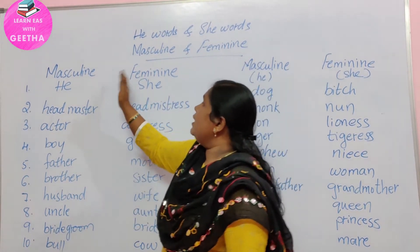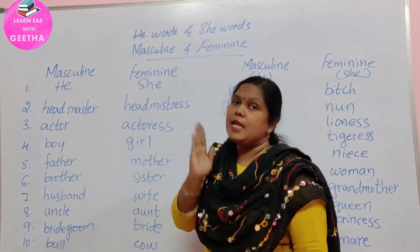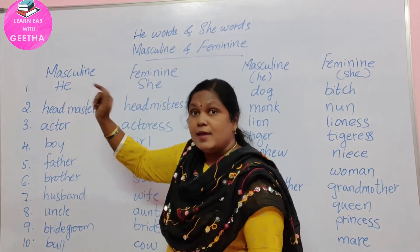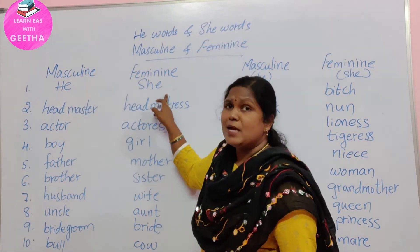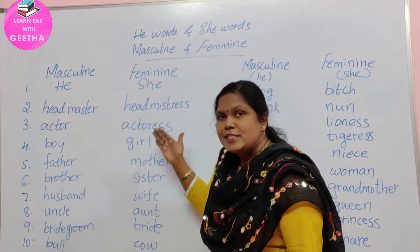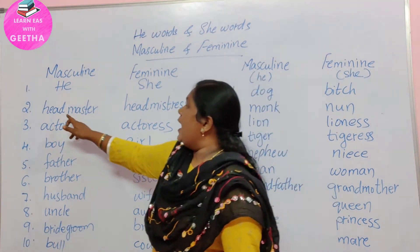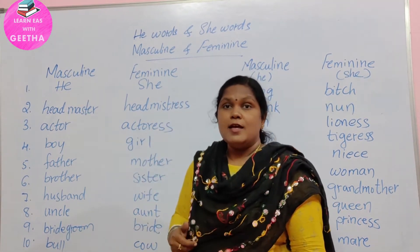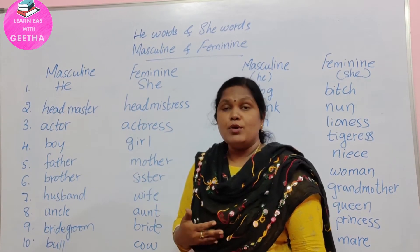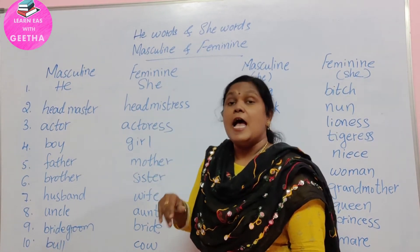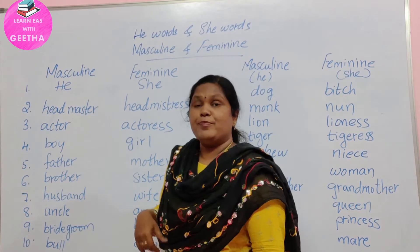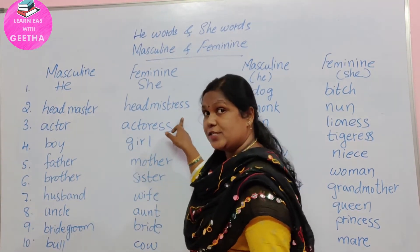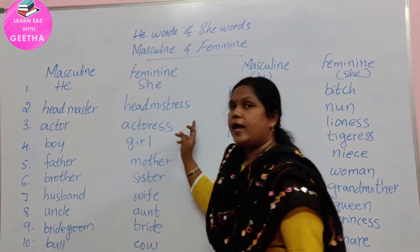Now let's see — masculine and feminine means he word and she word. 'He' refers to boys, 'she' refers to girls. For example: headmaster — when the school head is a man, we call them headmaster. If it is a lady, we call them headmistress. Headmaster, headmistress.